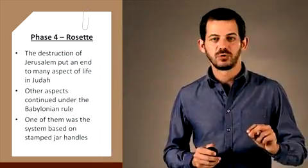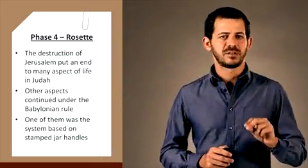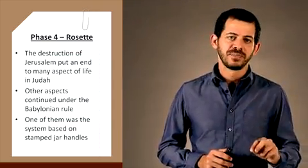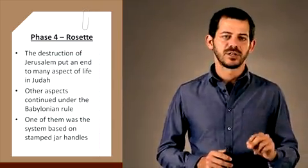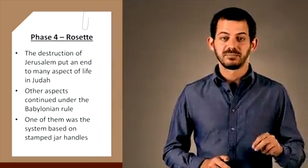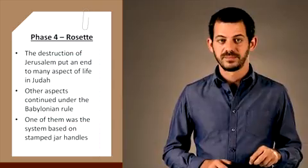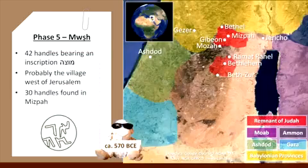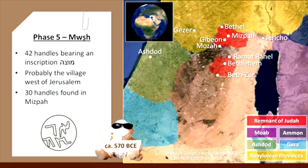The destruction of Jerusalem indeed put an end to many aspects of life in Judah, but as you have learned in this course, other aspects continued under the Babylonian rule. One of them was the same system based on stamped jar handles. There are 42 handles bearing an inscription, Moza, probably the village of Moza west of Jerusalem. Thirty handles were found in Mizpah, the seat of Gedaliah and the center of the Babylonian province after the destruction of Jerusalem.